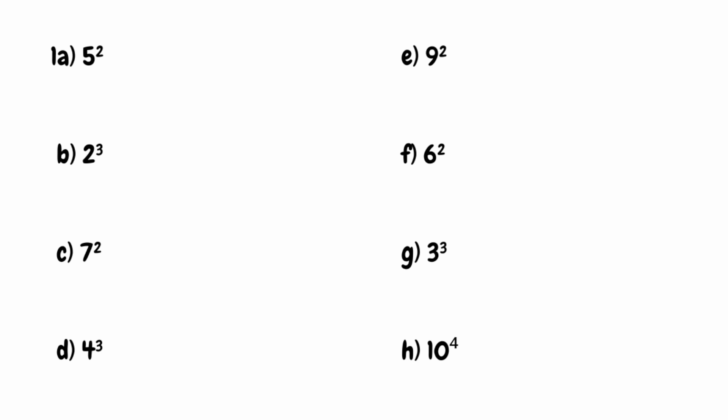For this first question, we've got 5 to the power of 2, which we also refer to as 5 squared. We've got a base number of 5 and a power of 2, so we're going to take this base number of 5 and multiply it by itself twice — 5 multiplied by 5 — which gives us 25. So 5 squared is equal to 25.